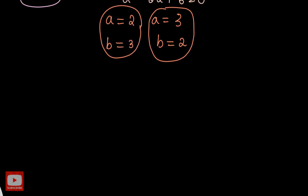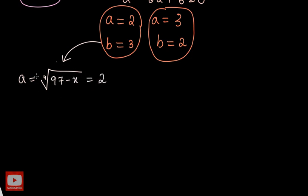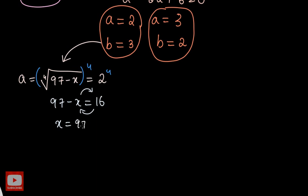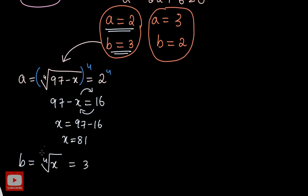From the first set, a = 2: the equation ⁴√(97 − x) = 2, raised to the power of 4 on both sides, gives 97 − x = 16, so x = 81. Checking with b = 3: ⁴√x = 3, raised to the power of 4, gives x = 3⁴ = 81. Both conditions give the same solution, so x = 81.